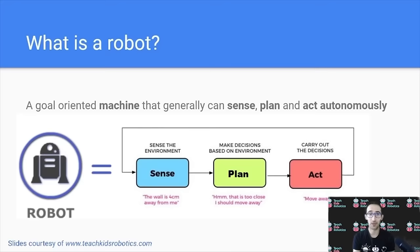So, a robot is a goal-oriented machine that can generally sense, plan, and act autonomously. So, what do each of these mean?